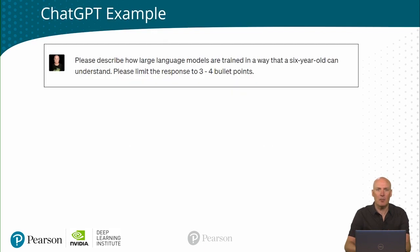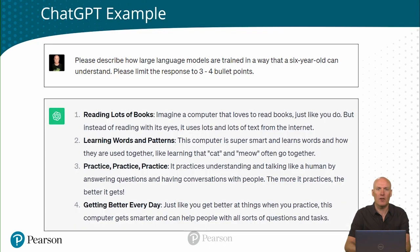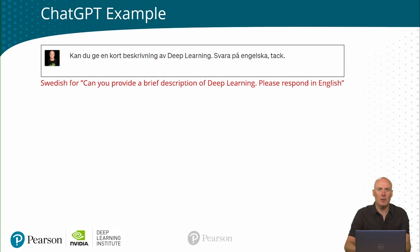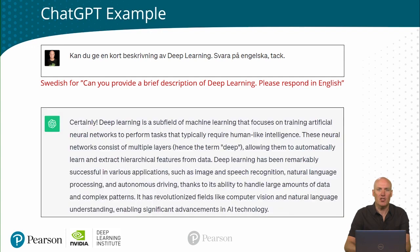Now let's look at an example of what ChatGPT can do, which uses the InstructGPT technology. We ask it to describe how a large language model is trained in a way that a six-year-old can understand, and the model will provide an impressive answer. Here is another example where we ask the model a question in Swedish. The translation of the question is: can you provide a brief description of deep learning? Please respond in English. And ChatGPT provides an impressive answer in English. We can see that it understands different languages and can follow instructions.